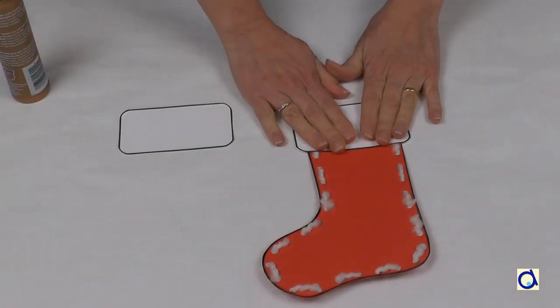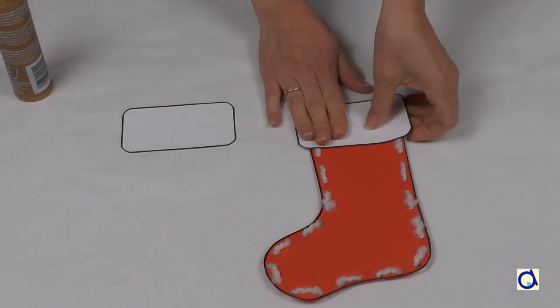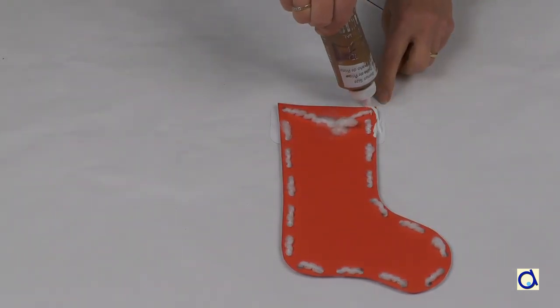When you have threaded the yarn all along the stocking, glue a cut-out that represents the fur on top of the stocking. There are three different patterns in the printable document.